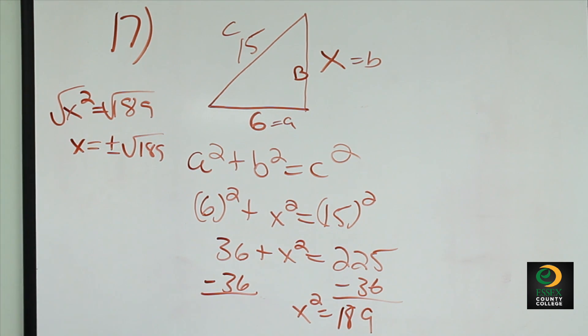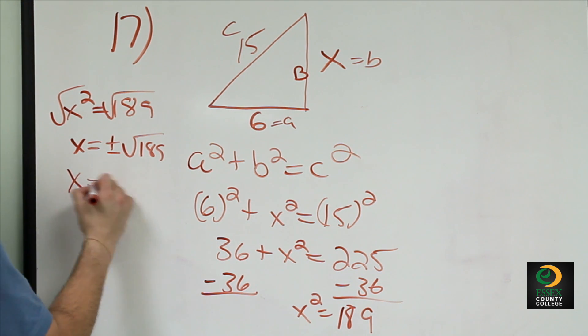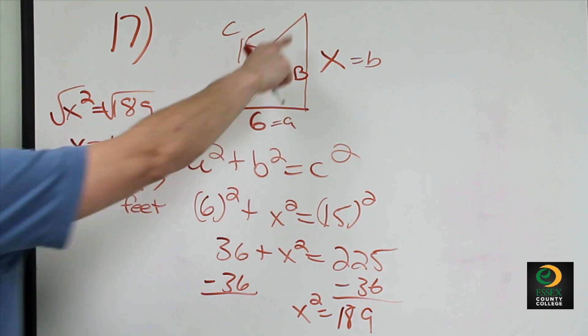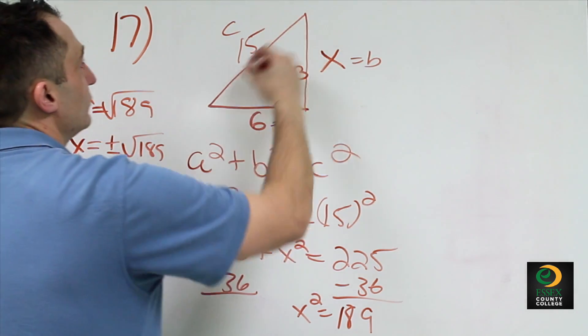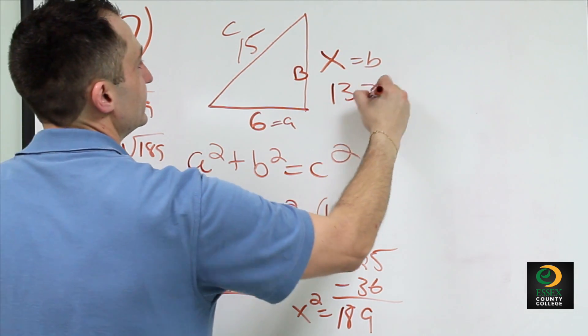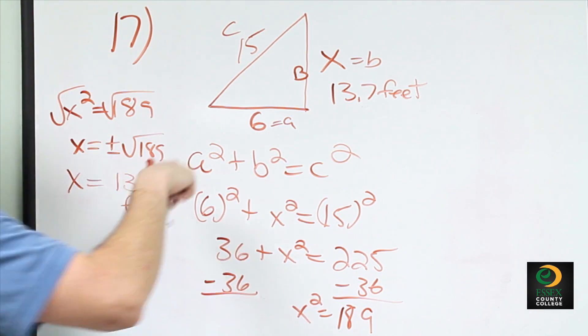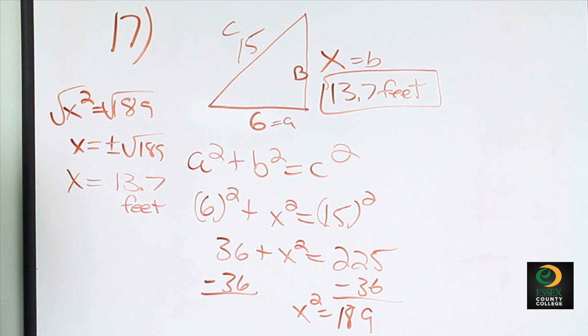And the square root of 189, so x is equal to 13.7 feet. So on the building the ladder will be leaning 13.7 feet up the wall. So your final answer for number 17 is 13.7 feet.